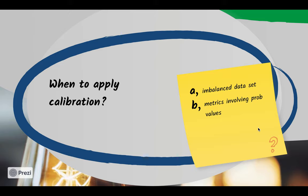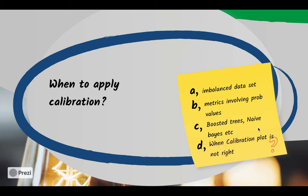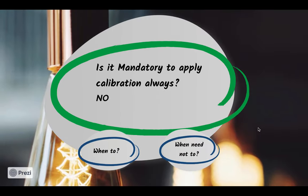Similarly, when a performance metric like log loss involves probability values, the predicted probabilities must be accurate. Algorithms such as boosted trees and naive Bayes have inherent biases in their predicted probabilities — naive Bayes, for example, makes the unrealistic assumption that all features are independent and normally distributed. Such assumptions can cause inaccurate probabilities. Drawing a calibration plot and checking whether it looks correct is another trigger for applying calibration.